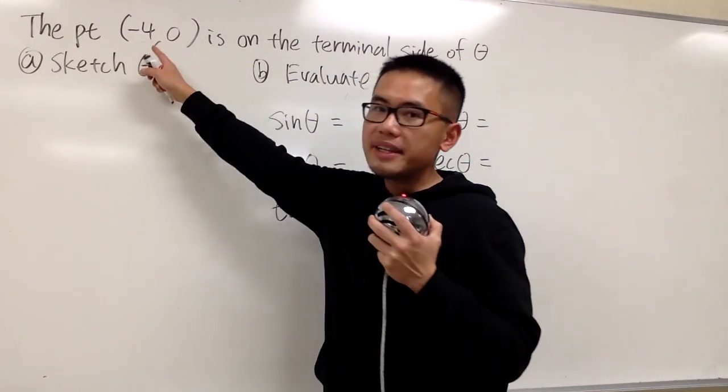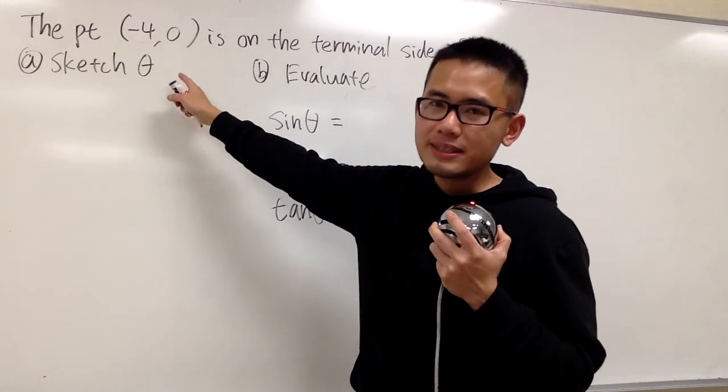Okay, here we're going to consider the point (-4, 0), and it's on the terminal side of the angle θ.